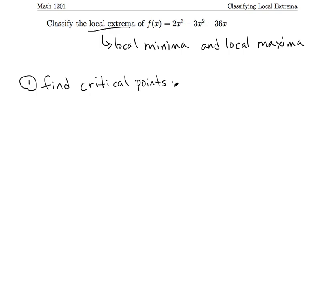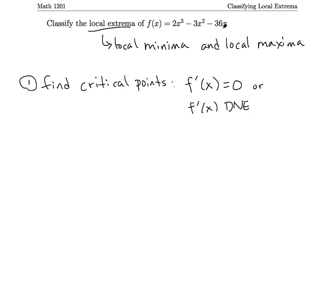What are critical points? We have two types: either our derivative is equal to zero, or the derivative does not exist. For this function, we only have to worry about the first case, because we have a polynomial. This function is defined for all real x values, and so is its derivative. So we don't need to worry about the DNE case for this specific example, though for other examples you will have to double-check that.